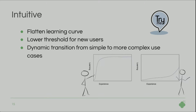With intuitive, we want to flatten the learning curve and lower the threshold for new users, so they actually try Transmart and get hooked on it. We want to change the amount of effort users have to invest before the experience becomes good, to a lower level where the experience is more satisfying at an earlier stage. As it's a scientific tool, we don't mind there being a learning curve, but the transition to more complex use cases should be dynamic.